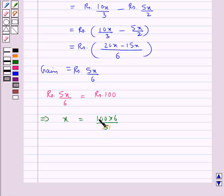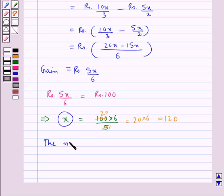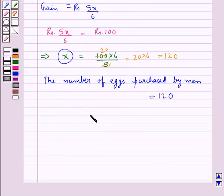Now 5, 20 times is Rs. 100. So this is equal to Rs. 20 into 6 is equal to Rs. 120. We had assumed X to be the number of eggs purchased by man and this is equal to Rs. 120. Hence, our final answer is Rs. 120.